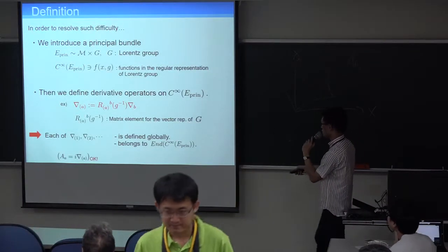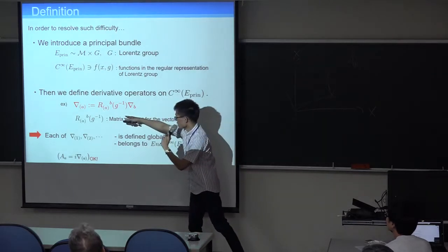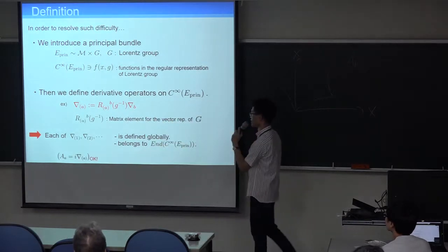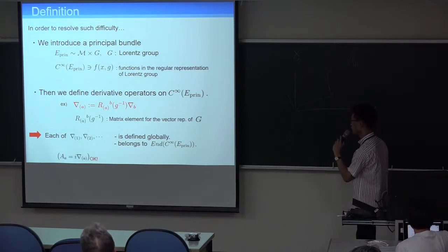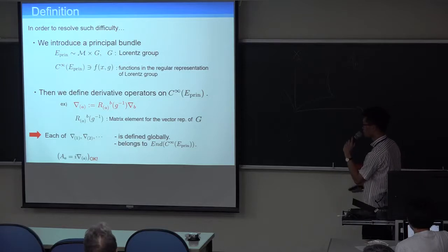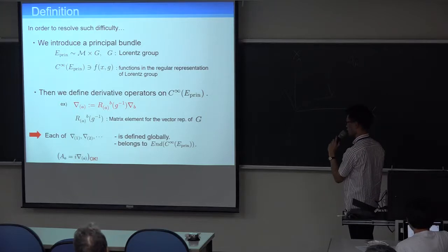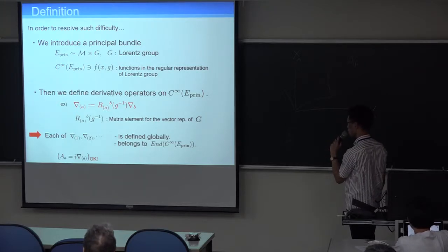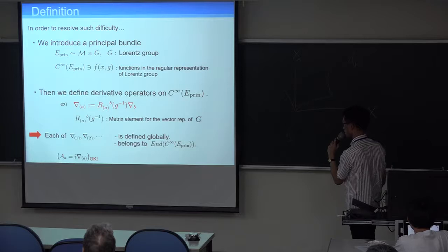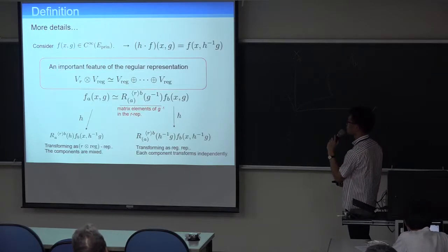Then we define derivative operators on that functional space as this product. And here's the usual covariant derivative. And this is the matrix element of a vector representation. By using this operator, each of these, say, the rest operator is well defined globally, and belongs to the morphism of the functional spaces.